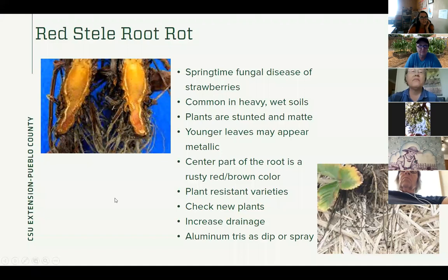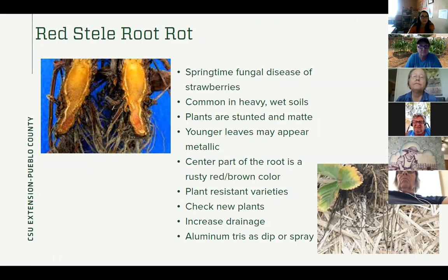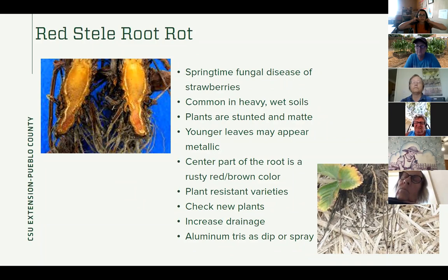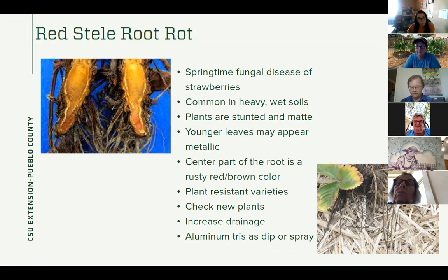For our strawberry growers, this is called red stele root rot — a problem on strawberries, usually in springtime; it's a fungal disease common in heavy, wet soils, and we have some heavy soils around here in Pueblo. The plants will be stunted and lose their shininess — they'll be kind of matte, and the younger leaves may appear to be kind of metallic looking. The center part of the root will be a rusty red-brown color — if you cut open the very center part of the root, that's what you would see. There are resistant varieties available. If you can increase the drainage of your soil by mixing in some compost, that will help. There's also a product called aluminum tris — it's sold as a spray and also as a pre-plant dip, so you can dip the root of the plant in it before you plant it.